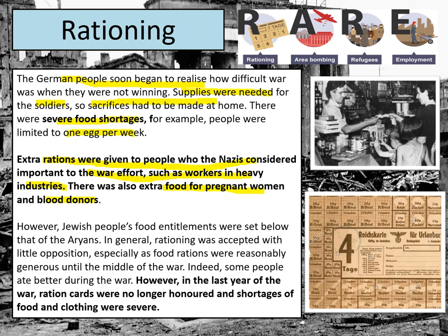This extra food came from reducing entitlements for others — Jewish people, for instance, had their food entitlements set way below that of Aryans, meaning some had to survive on about 300 calories a day. Overall, rationing didn't affect Germans as badly as some other nations, but in the last year of the war, ration cards were no longer honoured and shortages of food and clothing were really severe. By 1945, the German economy was in tatters, with many refugees and people unable to access enough food.